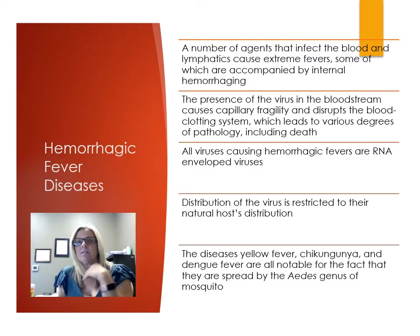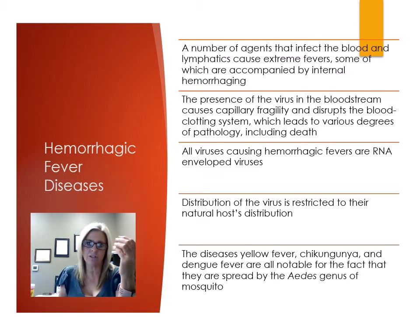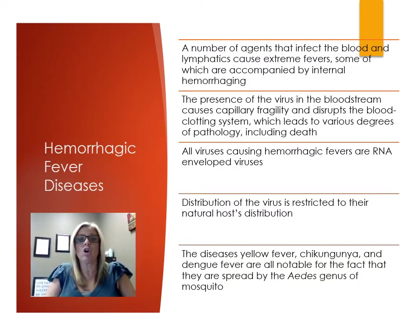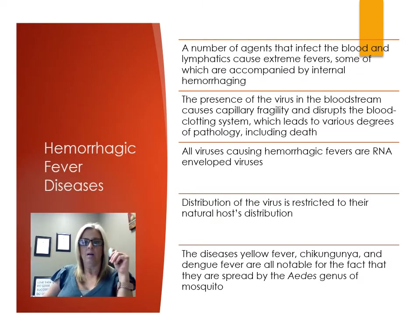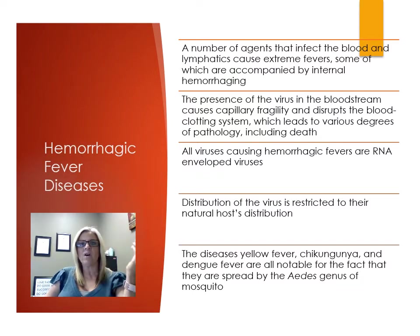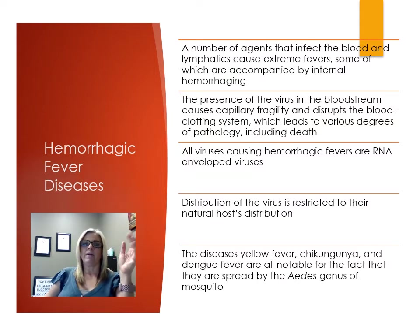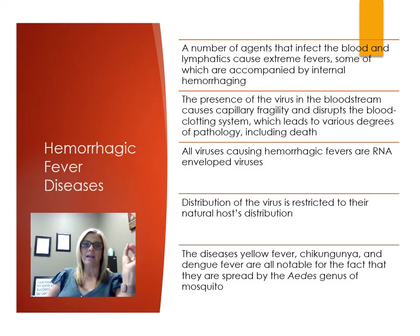Many agents that infect the cardiovascular system, blood, and lymphatic system cause very high fevers, and some are accompanied by internal hemorrhaging. Hemorrhagic fever diseases involve the virus in the bloodstream causing capillaries to become more fragile and interrupting blood clotting ability, leading to varying degrees of pathology and potentially death. All viruses causing hemorrhagic fever are RNA enveloped viruses, and their distribution is limited to the natural host distributions.